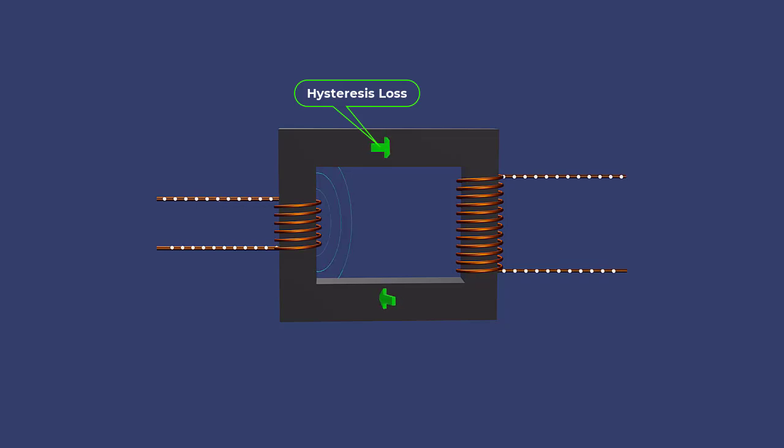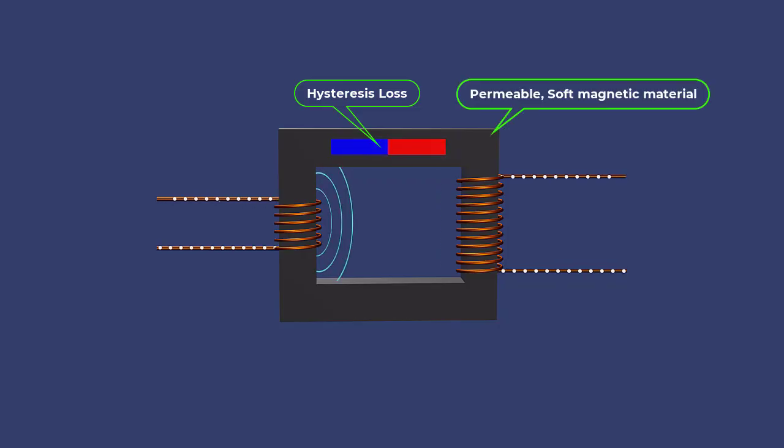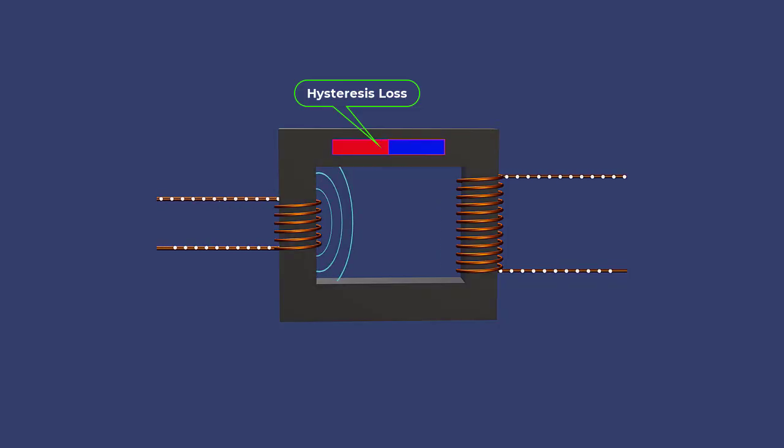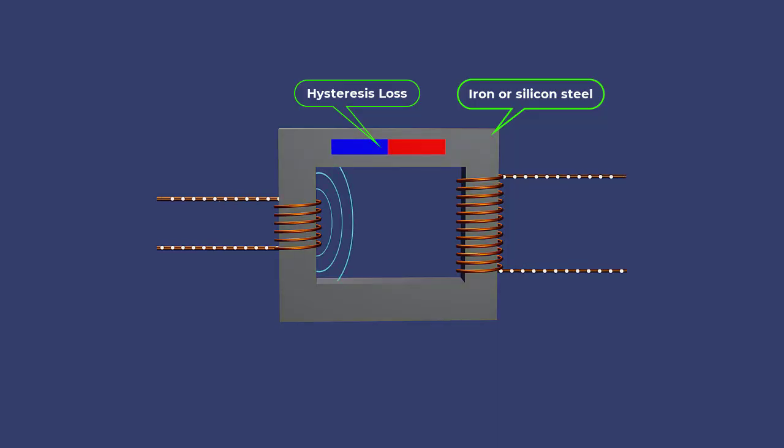Hysteresis loss occurs due to continuous magnetization and demagnetization of the core material. These losses can be reduced by using highly permeable, soft magnetic core materials, such as iron or silicon steel, to maximize the magnetic field strength.